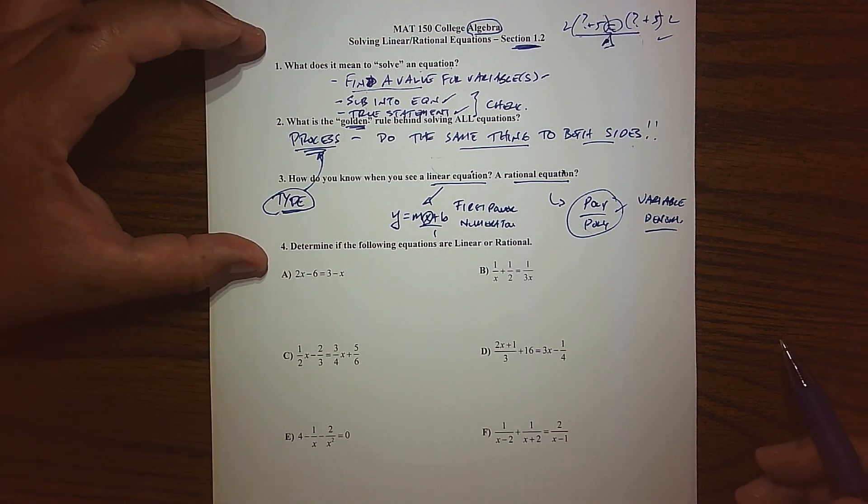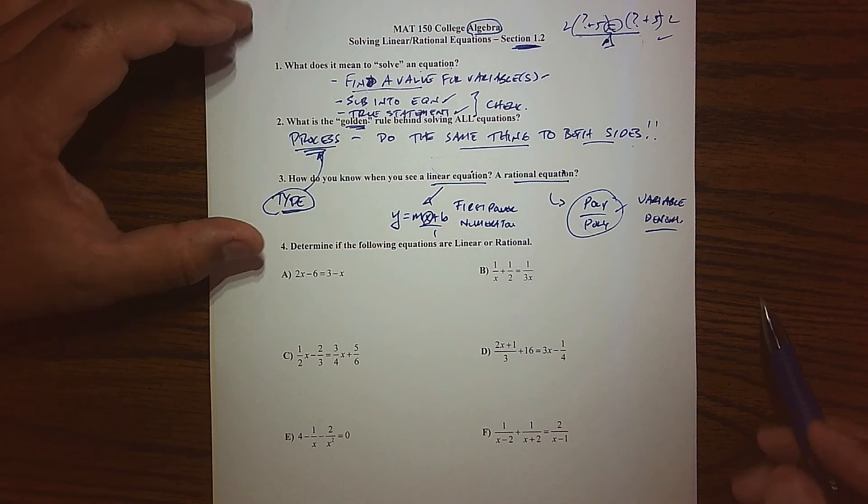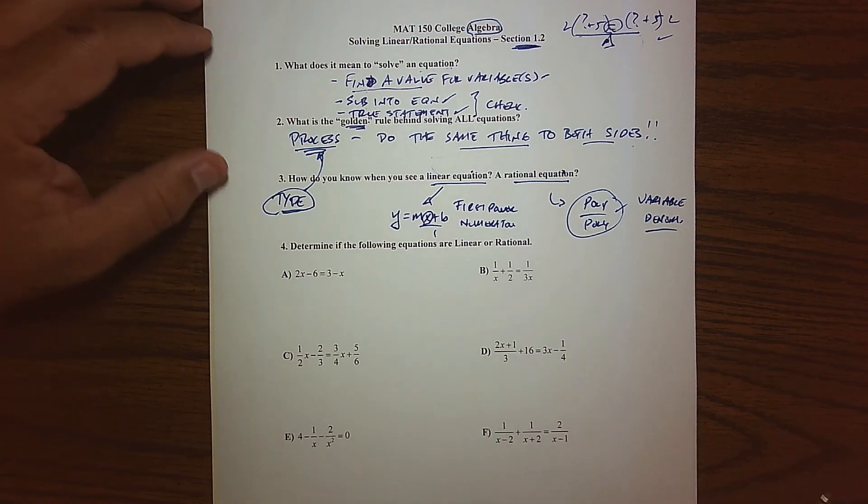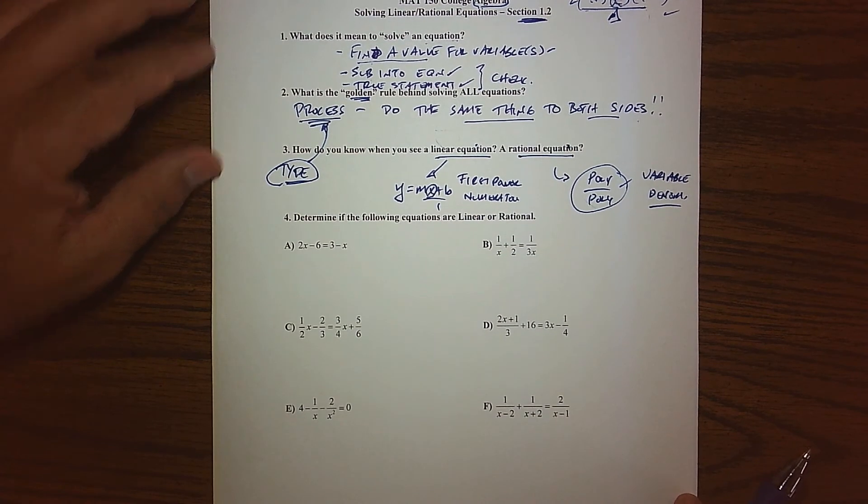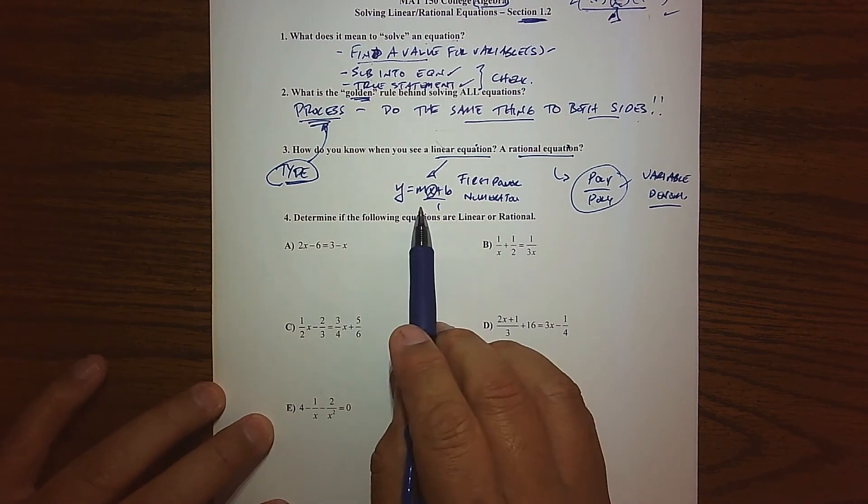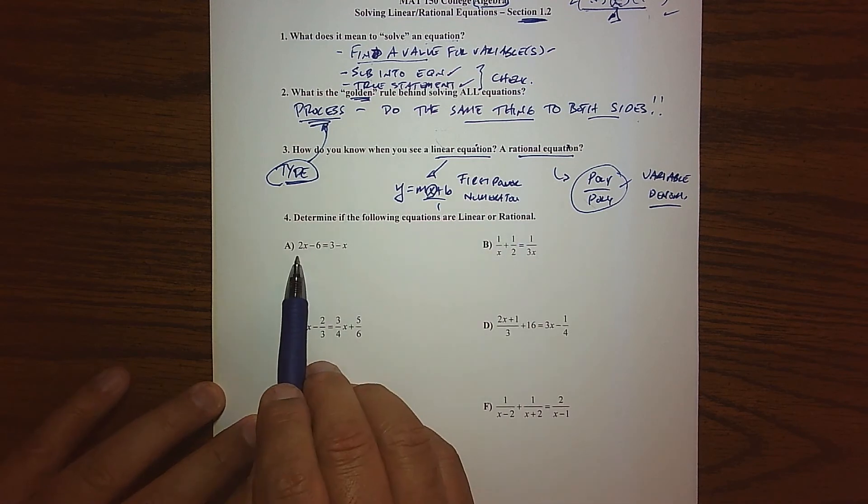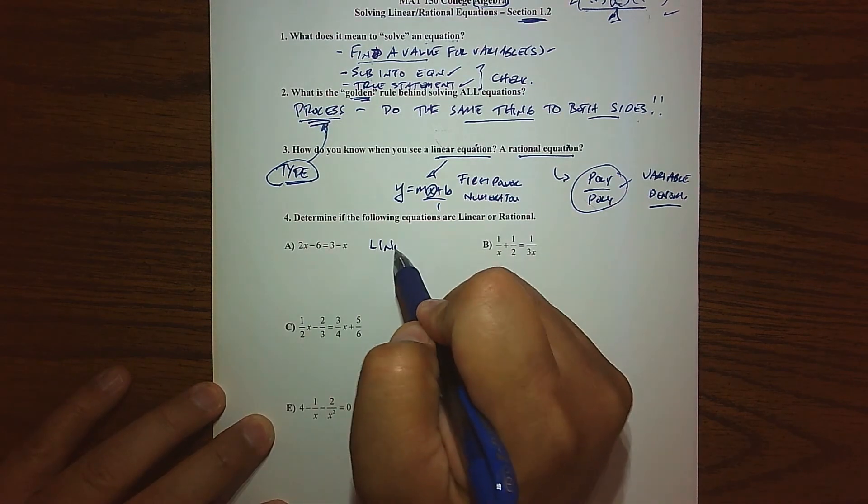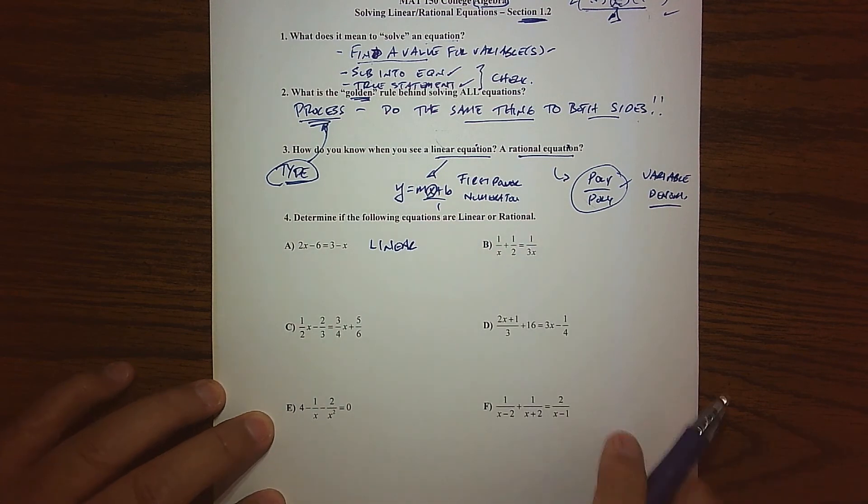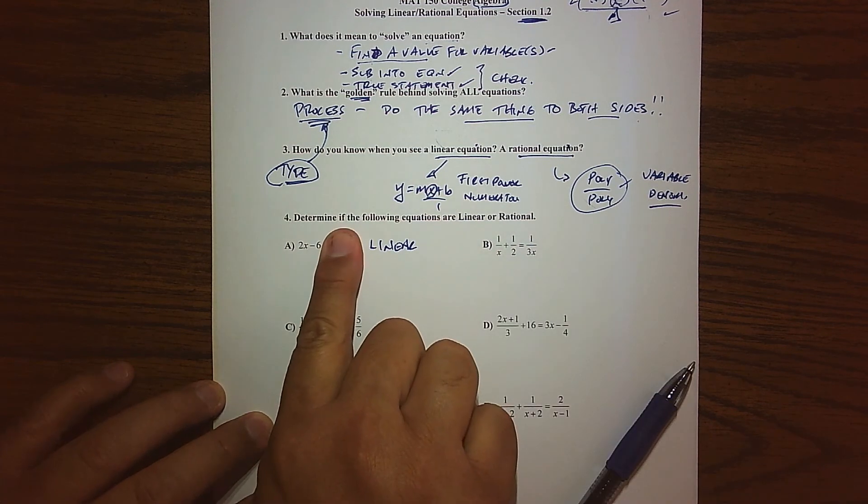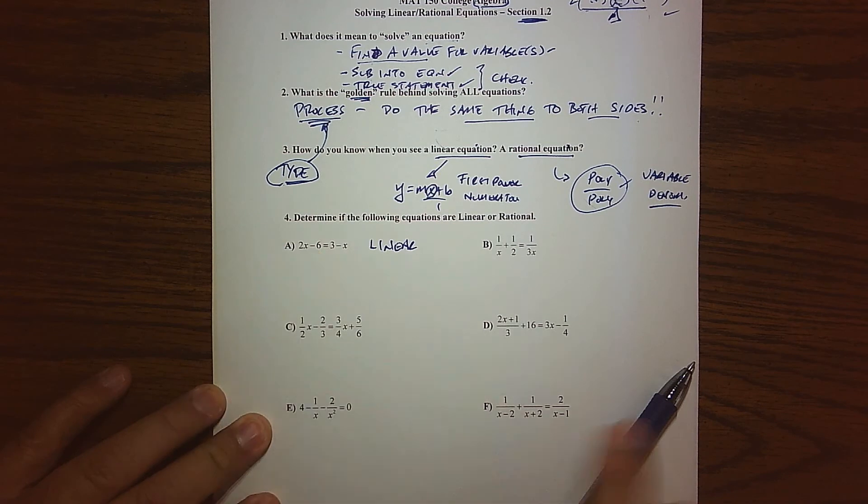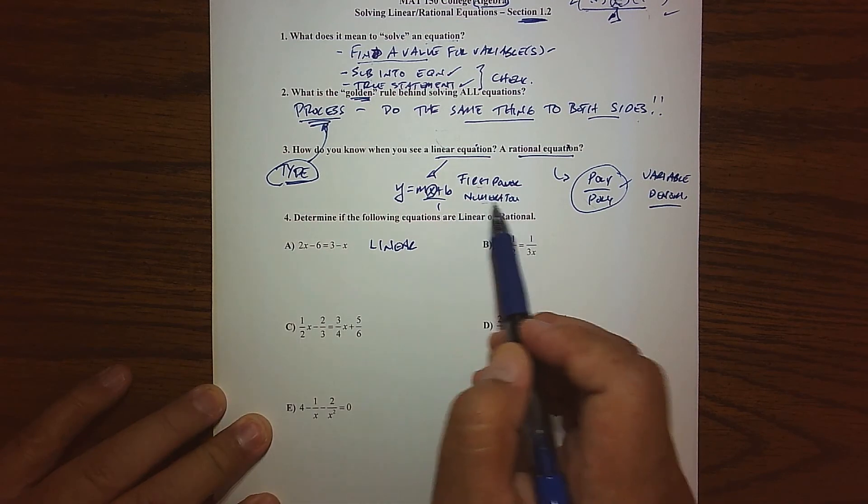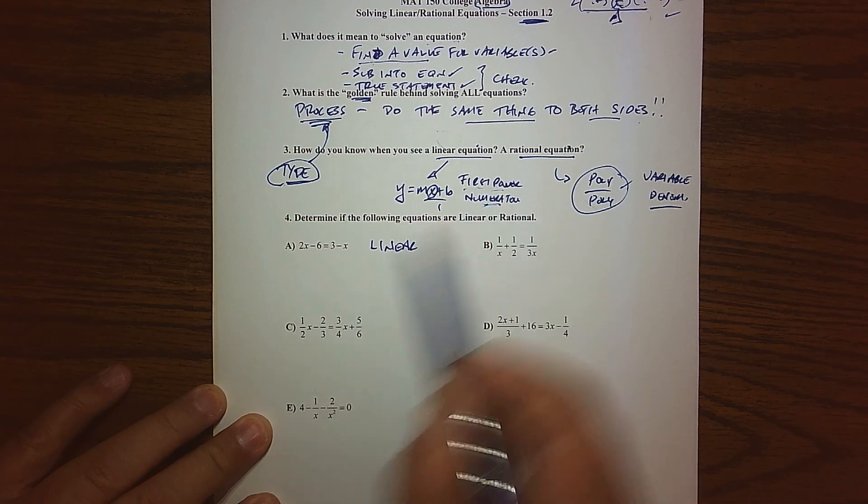So let's practice this last skill. Here what I have are six equations. And let's figure out which ones are linear and which ones are rational. And again, we're just going to kind of go back to our definition. So letter A, this is very clearly a linear equation. First of all, if you just look at one side, that basically fits your mx plus b. And even the other side, it's kind of miswritten around, but it's mx plus b.